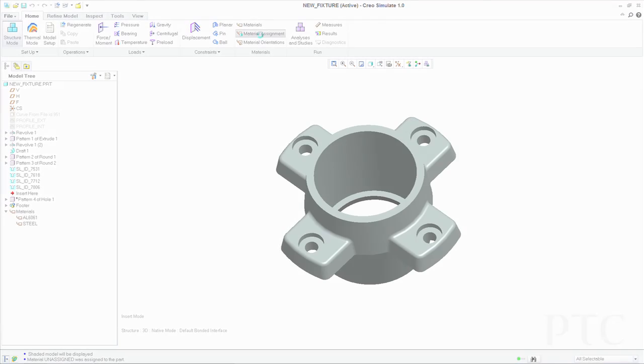Creo Simulate is our dedicated structural and thermal and vibration analysis solution built on the Creo product family. And what we've done with Creo Simulate is take all the best capabilities that used to be locked within the parametric modeling application and split them out into a standalone analysis tool.